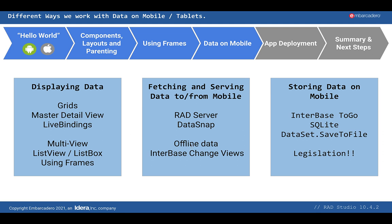InterBase ToGo is also really secure and provides on-disk encryption, which is absolutely essential from a legislation standpoint if you're storing any personalized data. Offline data is really handy for caching data that you need regularly. IBLite is also a free version, though it doesn't have encryption or Change Views. InterBase is a great option for offline data storage on mobile.